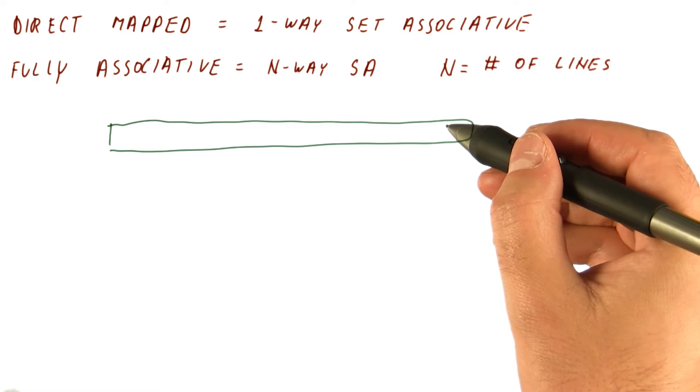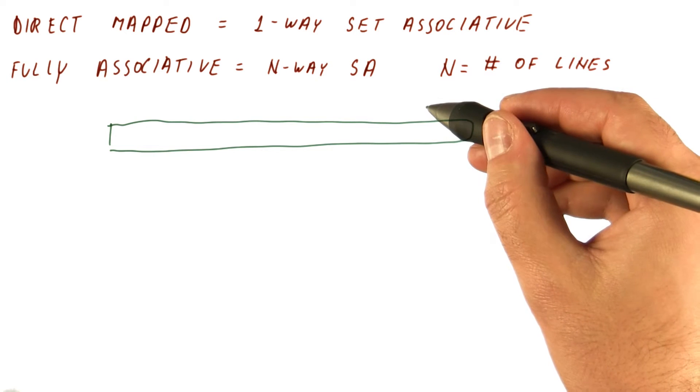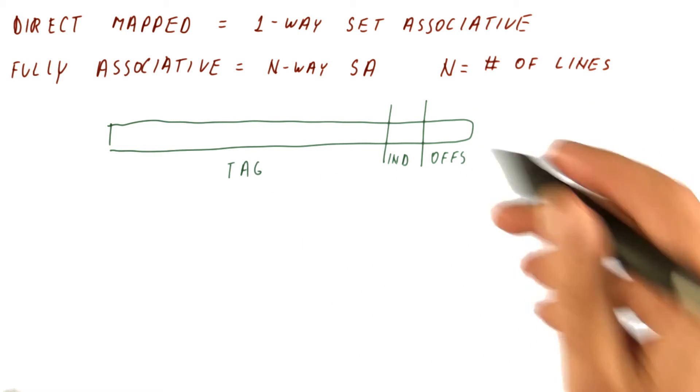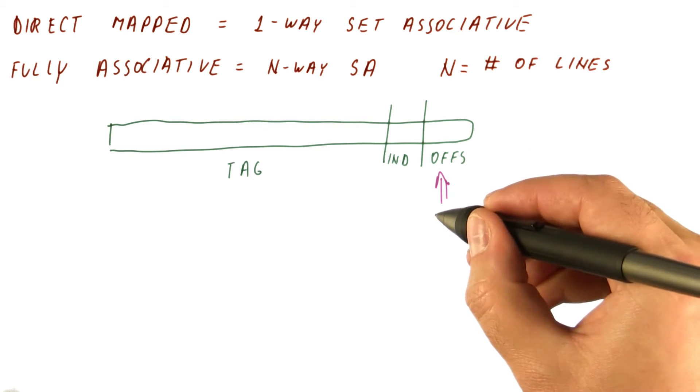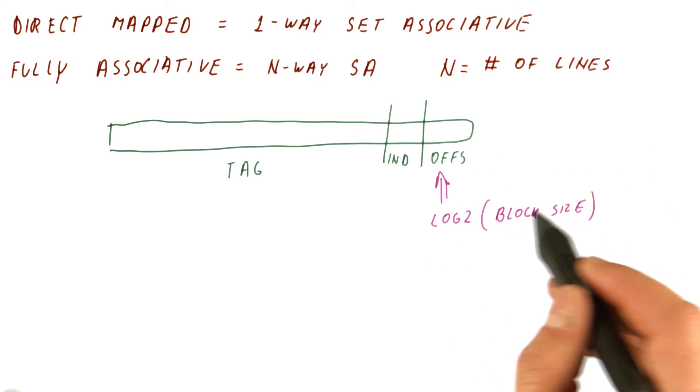For all these caches, the address that the processor supplies is broken into the offset, index, and tag components. The number of offset bits is the number of bits that we need to tell us where in the block size we are, so it's log two of block size.